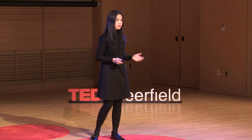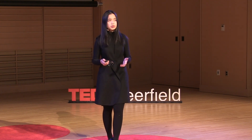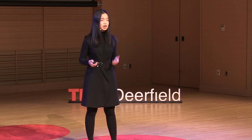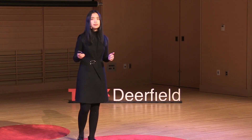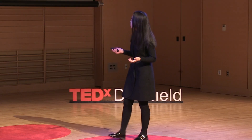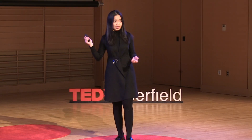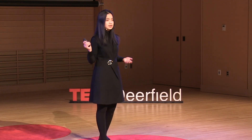Let me quickly review what we have built. First, zero is a natural number, and natural numbers are closed under S. S is an injection. There is no natural number whose successor is zero. And finally, induction. All of these laws are called the Peano axioms. But the axioms are not complete yet.